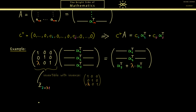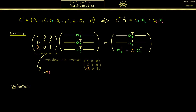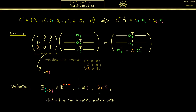Now we can put this into a general definition. We define all these Z matrices with two indices i and j, where the resulting matrix is an m times m square matrix — square because we multiply from the left without changing the shape of A. It's important that the two indices don't coincide, so i is not equal to j, and lambda can be any real number. We define matrix Z as the identity matrix with lambda placed at the i,j-th position. This gives an invertible matrix that describes the row operation for adding rows.